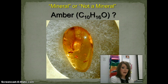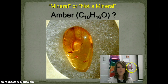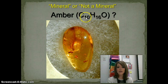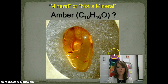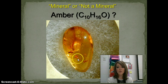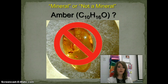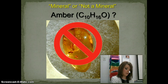Our last example we're doing together is amber. Amber is fossilized, hardened tree sap, and its chemical formula is C10H16O. So amber definitely has a definite chemical composition. However, it doesn't have a crystal structure, and more importantly, it can contain the remains of an insect — remains of living things — so it is not considered inorganic. Amber is not a mineral because it does not meet the characteristic of being inorganic.